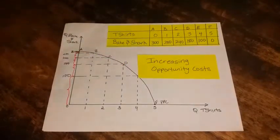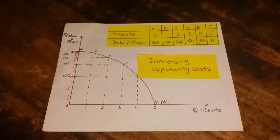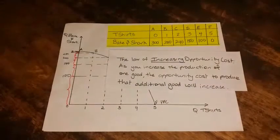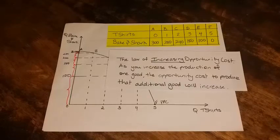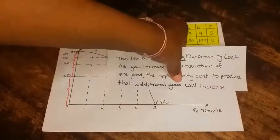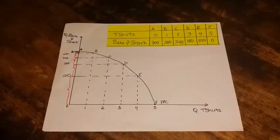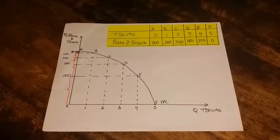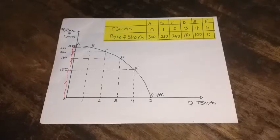What is the law of increasing opportunity cost? It pretty much states that as you increase the production of one good, the opportunity cost to produce that additional good will increase. So as I increase the production of t-shirts by one unit, the opportunity cost of producing the next unit of t-shirts increases — in terms of bacon shark. This occurs because my resources are best suited towards making bacon shark.